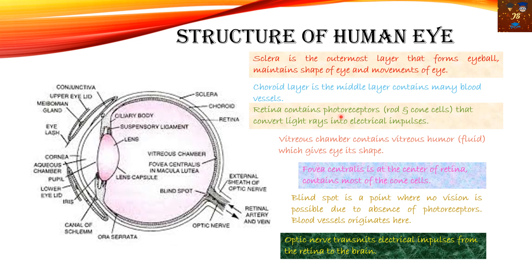Next comes the retina — it contains photoreceptors, specifically the rod and cone cells, that convert light rays into electrical impulses so that we can see objects. Next, the vitreous chamber is a very large chamber filled with fluid called vitreous humor, which gives shape to the eye. The fovea centralis is located at the center of the retina.